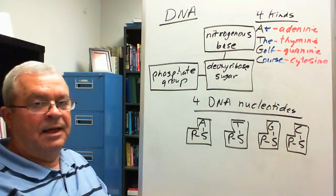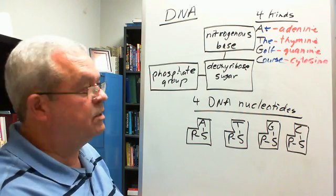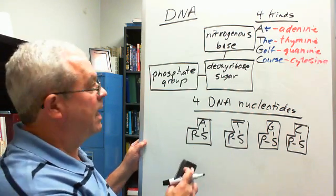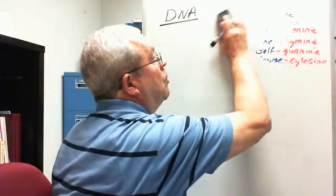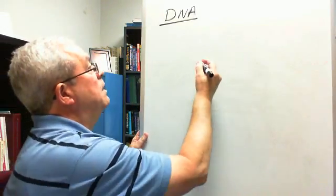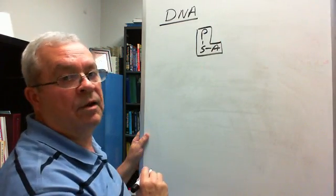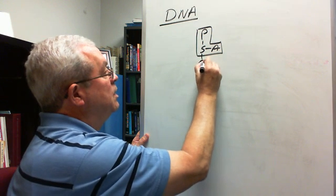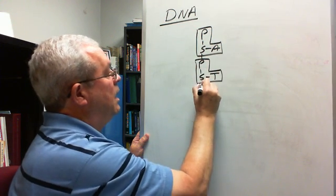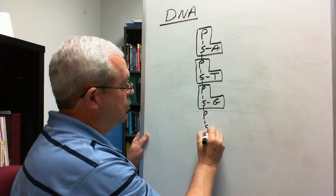How are these nucleotides joined together to form a DNA molecule? You know from the previous video that Watson and Crick became famous for figuring this out. They discovered that these nucleotides are arranged like a ladder. I'm going to draw half a ladder first — the sugar group of each nucleotide is connected to the phosphate of the next: phosphate-sugar-A, phosphate-sugar-T, phosphate-sugar-G, phosphate-sugar-C.